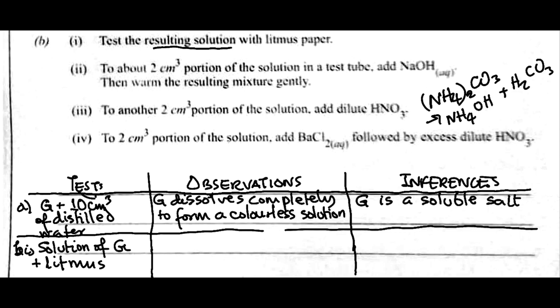And because the salt of a weak base and a weak acid when it undergoes hydrolysis, it's expected that the solution will be what? Neutral. Because it's assumed that both acid and base will have equal strength. So, they cancel themselves out. But that's not what happens practically. Now, what happens is that if you test with litmus, the solution of G will turn red litmus paper blue, but it will not have any effect on blue litmus paper which means that the solution of G will be what? Alkaline. Now, why is that so?